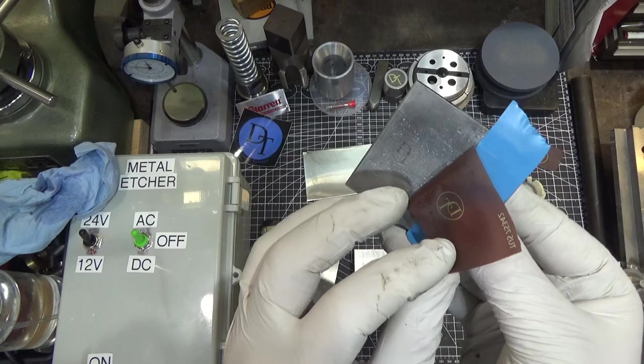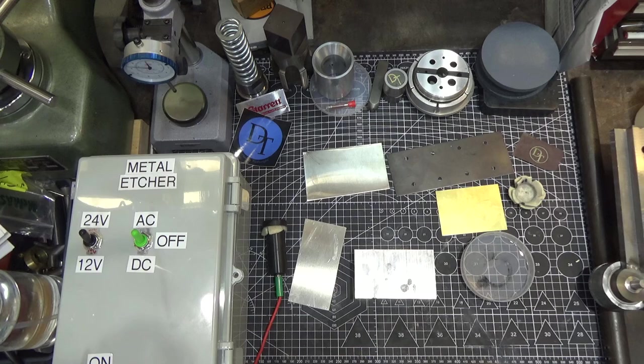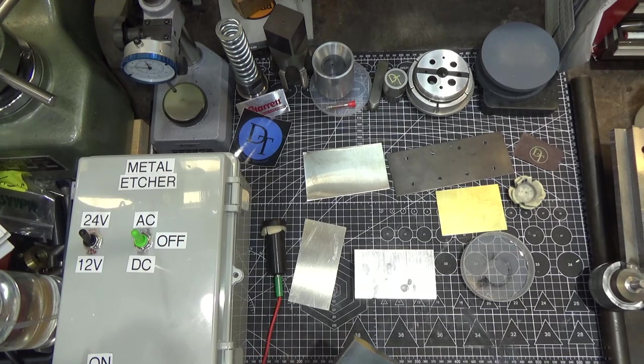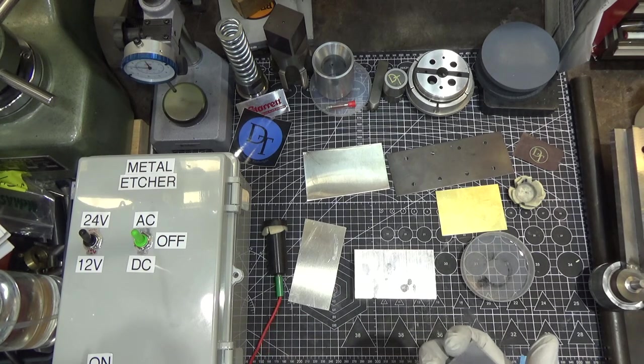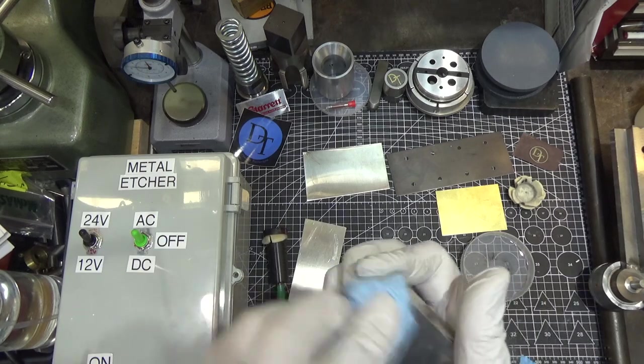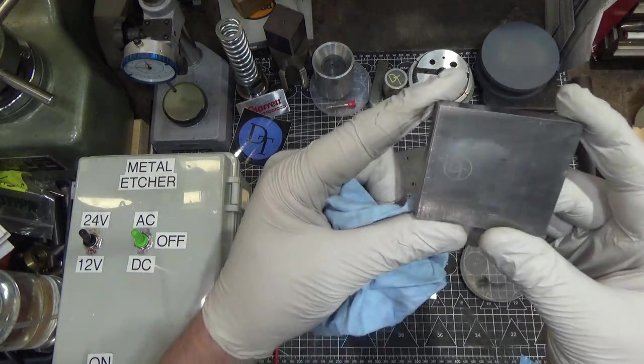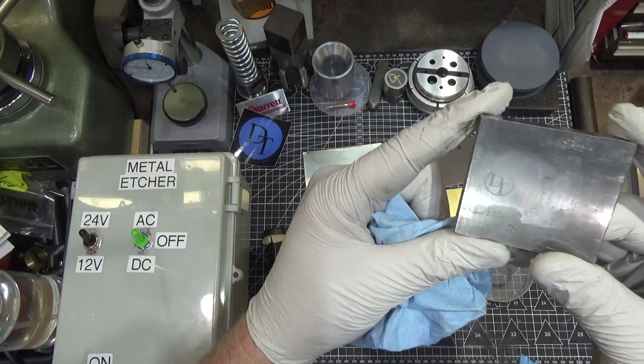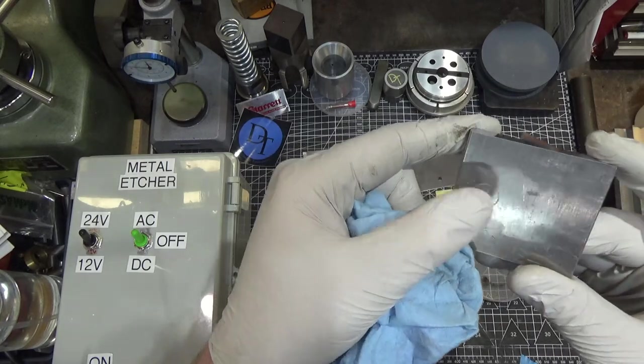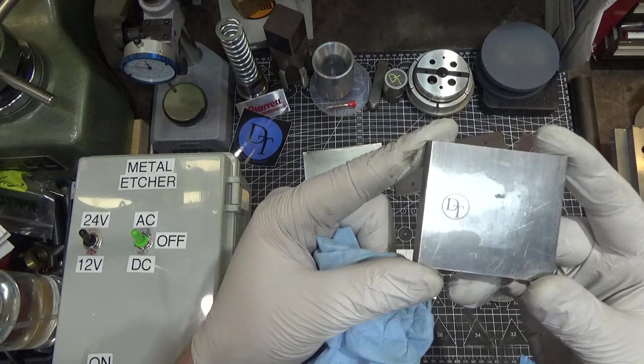This steel probably would have worked better if it was polished first but I didn't do that. Oh, there we go. That's a pretty darn good marking there. Let's take off the template. So sometimes some of the etching material comes off after but that's very legible and respectable. You can even feel that a little bit. So that's good. I'm pleased with that one too.